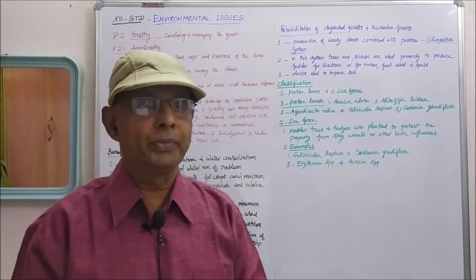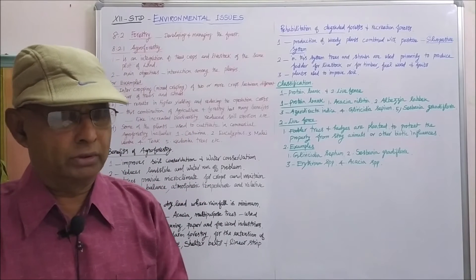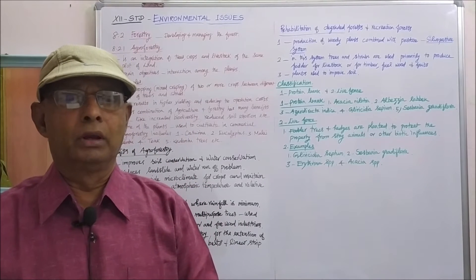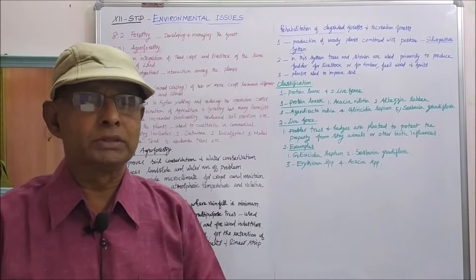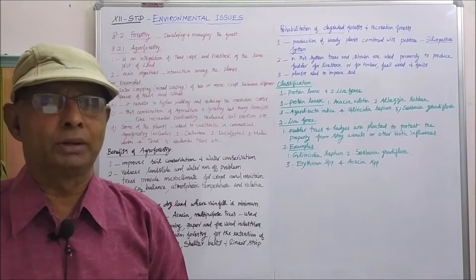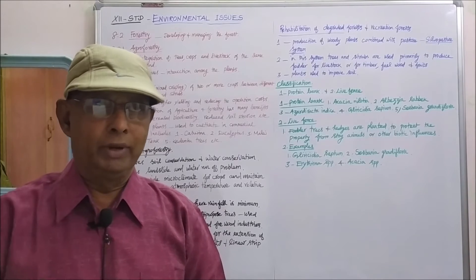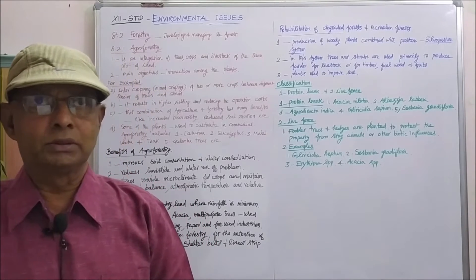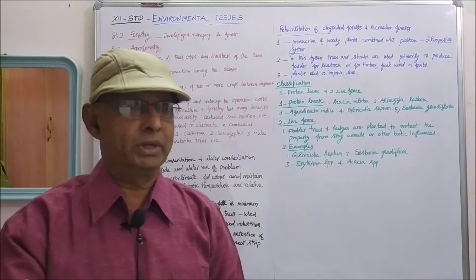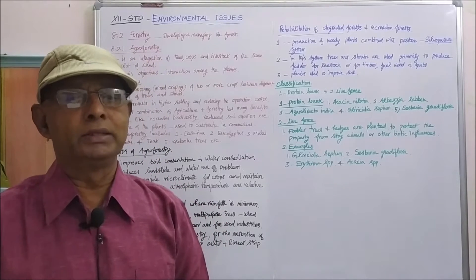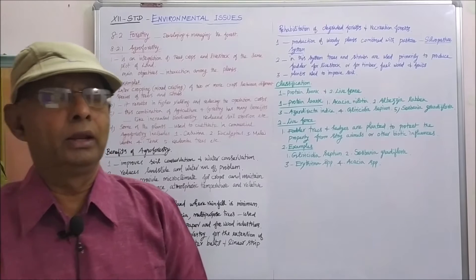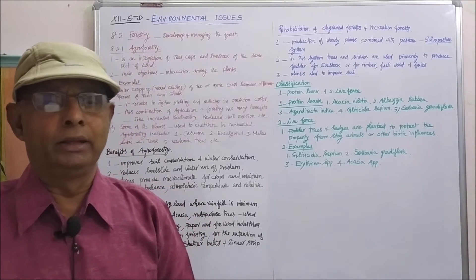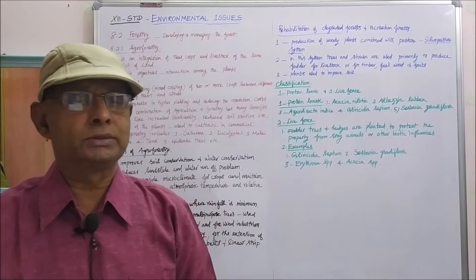For example, intercropping. Intercropping means mixed cropping. Intercropping of two or more crops between different species of trees and shrubs. In between one type of species, different type of species will be cultivated. That is mixed cropping.